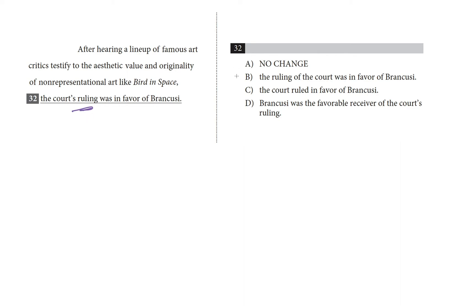Choice B has the exact same problem as A — it just changes 'the court's ruling' to 'the ruling of the court.' These are interchangeable, and if you ever see two choices that are basically the same, cross them both out — they can't both be right, so they must both be wrong. Choice C — the court ruled in favor of Brancusi — this checks out. The court heard the testimony and the court made a ruling. This is our answer; it's the only choice that fixes the modifier problem we identified.